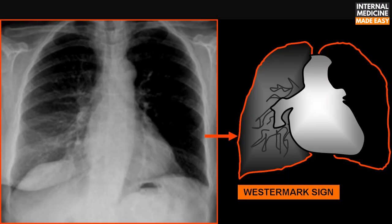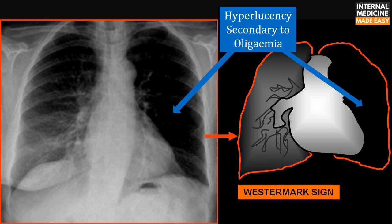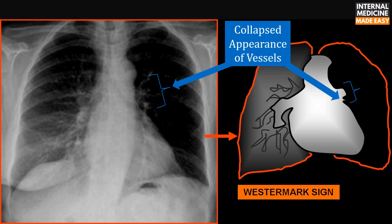This X-ray demonstrates the Westermark sign. You can see the hyperlucency secondary to oligemia and the collapsed appearance of vessels.